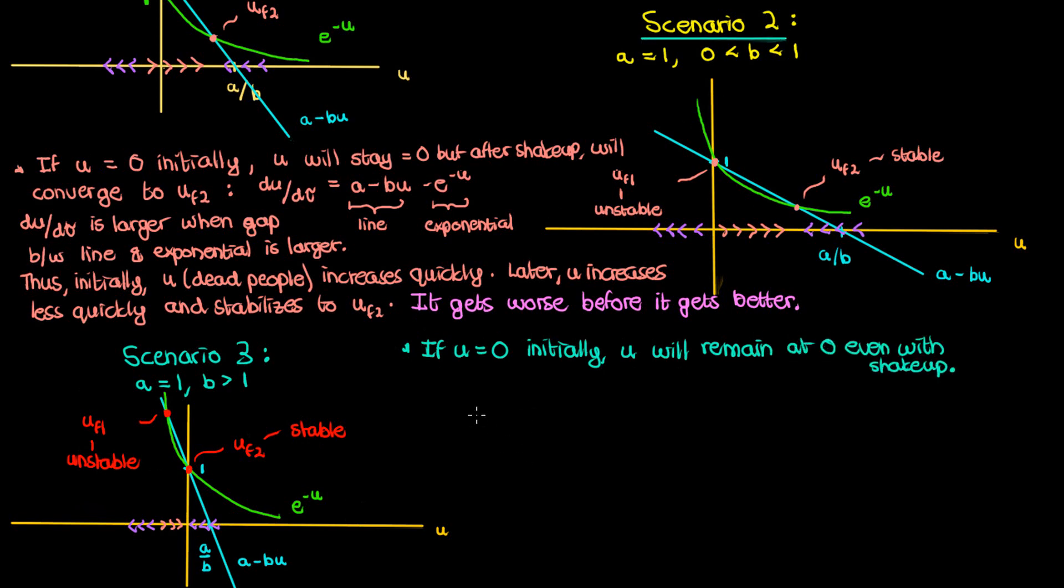Even if I shake things up and add more infected people the infection won't spread aggressively enough and it won't kill aggressively enough. This is in contrast to scenario two where the zero fixed point was unstable and the non-zero the positive fixed point was stable. So it's almost like the positive fixed point became negative and exchanged stability with the zero fixed point.